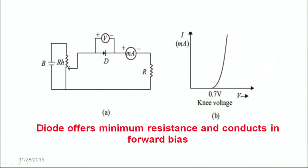A forward bias means that the P type is connected to the positive terminal of the battery and the N type is connected to the negative terminal of the battery. This makes the diode in a forward bias. The diode is connected in forward bias as shown here. To measure the voltage, we have a voltmeter connected in parallel and an ammeter connected in series with the circuit.